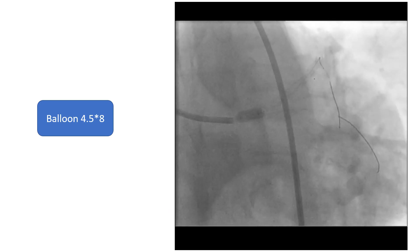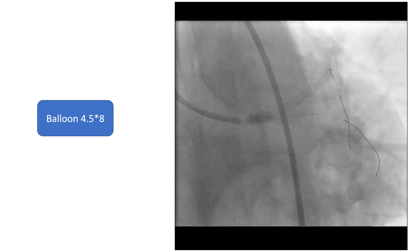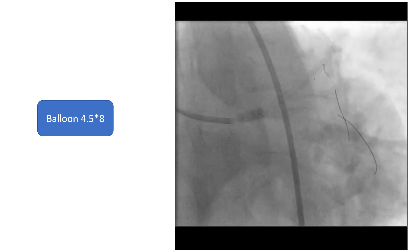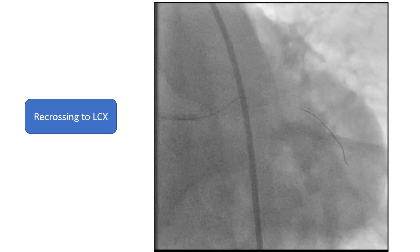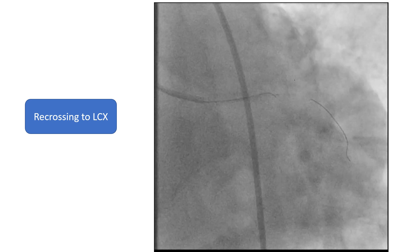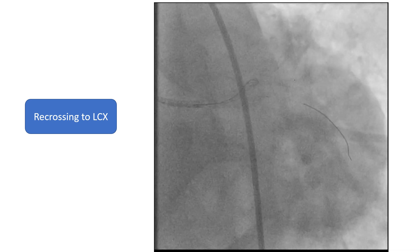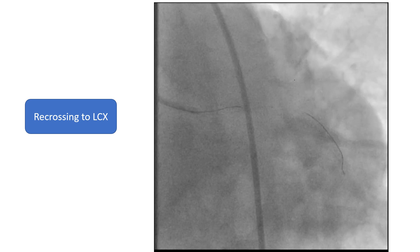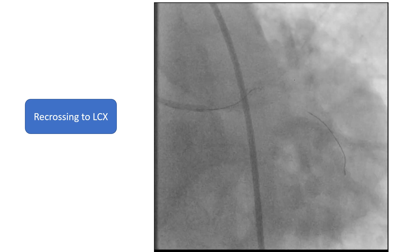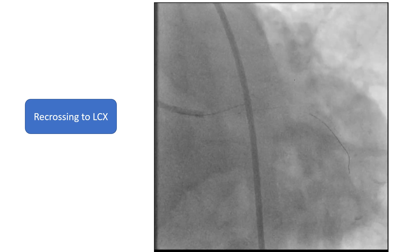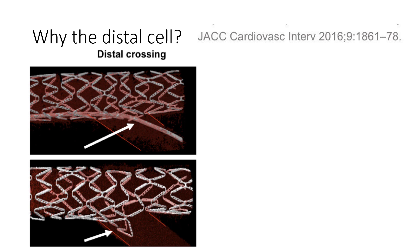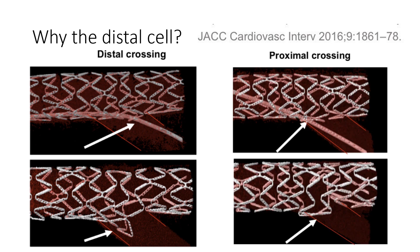That was done in our case — a non-compliant balloon, 4.5 by 8 mm, was inflated in the left main stem proximal to the carina. Now recrossing can be done, and it is best done through the distal cells. To do that, you can pull back the wire of the main vessel and aim at the distal cells to cross to the side branch, or take a third wire and push it distally then pull it back to recross. Recrossing through the distal cells provides better scaffolding of the side branch ostium when kissing inflation is done, while proximal cell crossing will push the stent strut toward the main vessel.